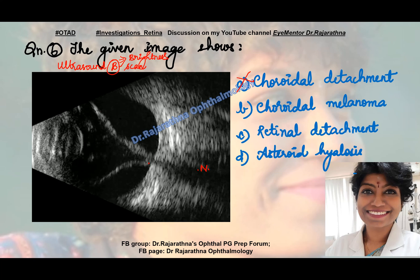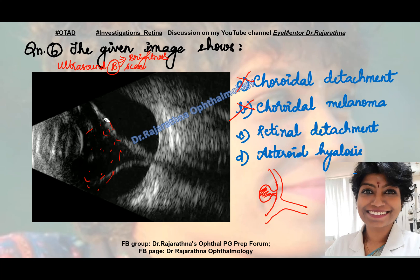Choroidal melanoma is like a mushroom-shaped or collar-button-shaped tumor — you will have a mass like that. Retinal detachment — yes, I have already told you this is retinal detachment. Asteroid hyalosis is a vitreous degeneration where you will have some opacities in the vitreous like a mass. I will show you that picture sometime later.